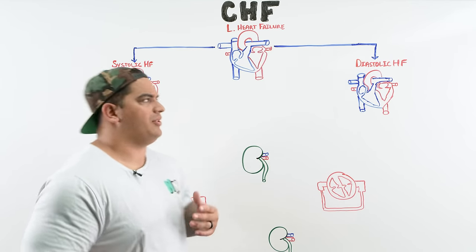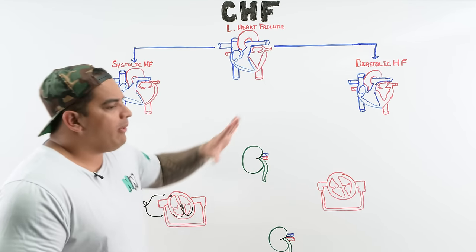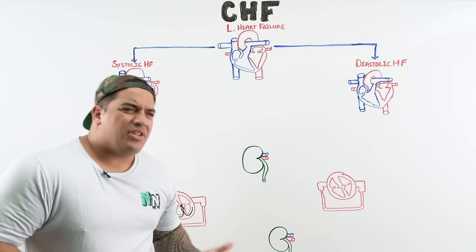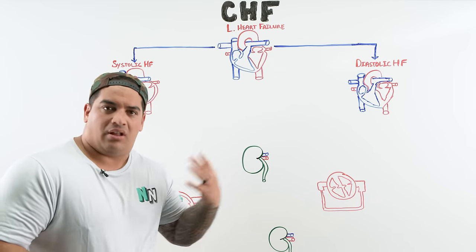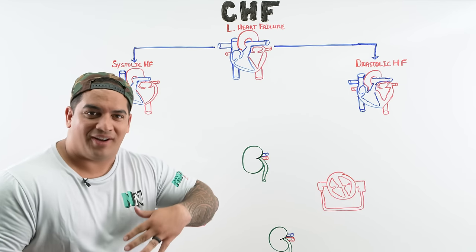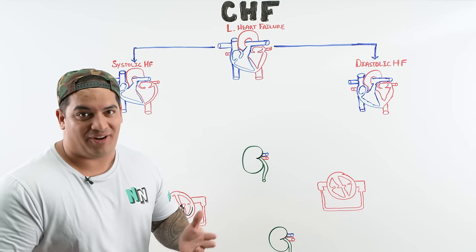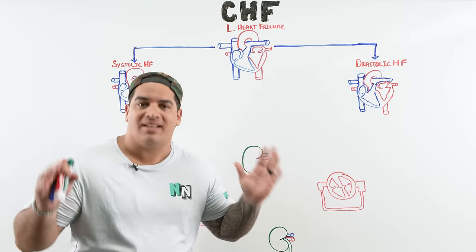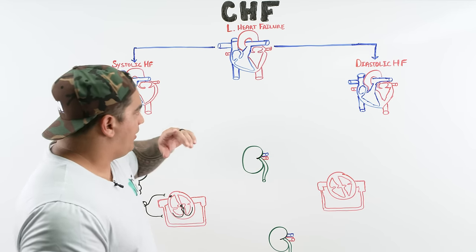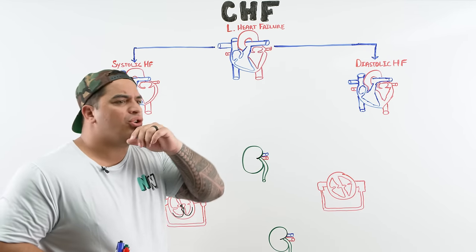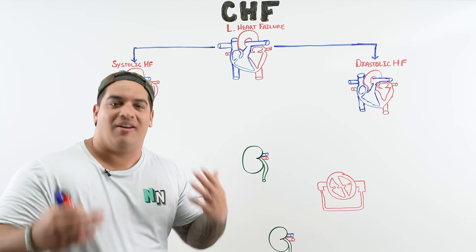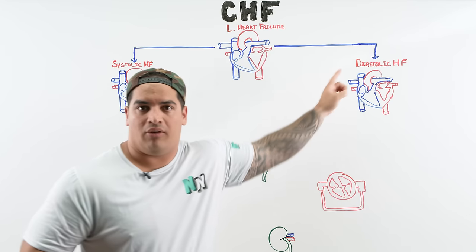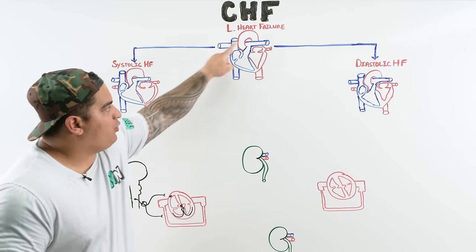Let's start talking about CHF, or congestive heart failure. The first thing I want to cover is the pathophysiology. There are a few different types of heart failure: left heart failure, right heart failure, and a weird one called high output failure. We'll start with left heart failure, by far the most common type. Within left heart failure, there are two subtypes: systolic and diastolic heart failure.